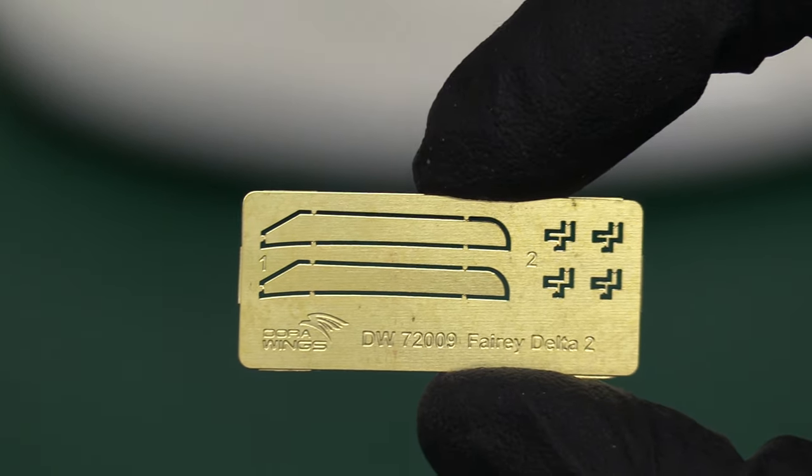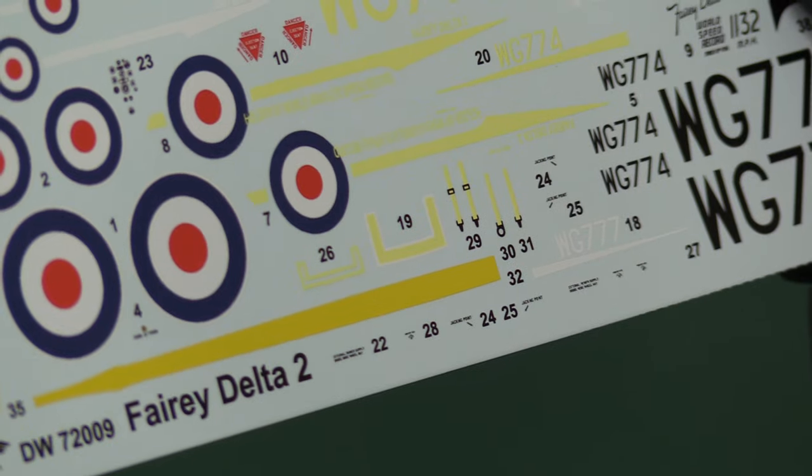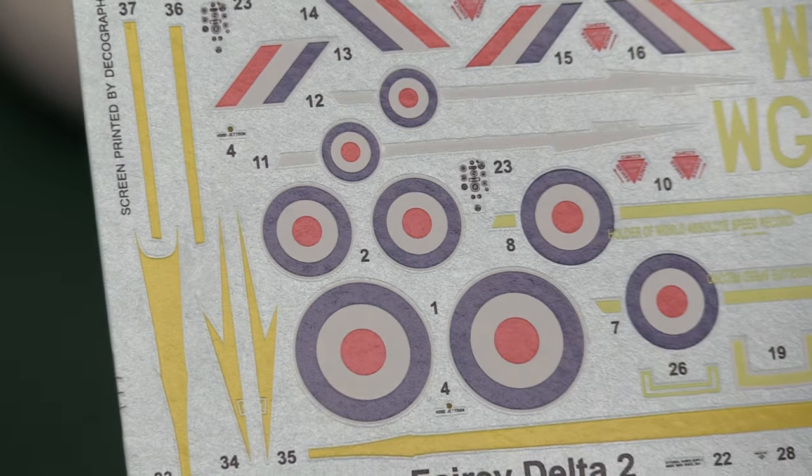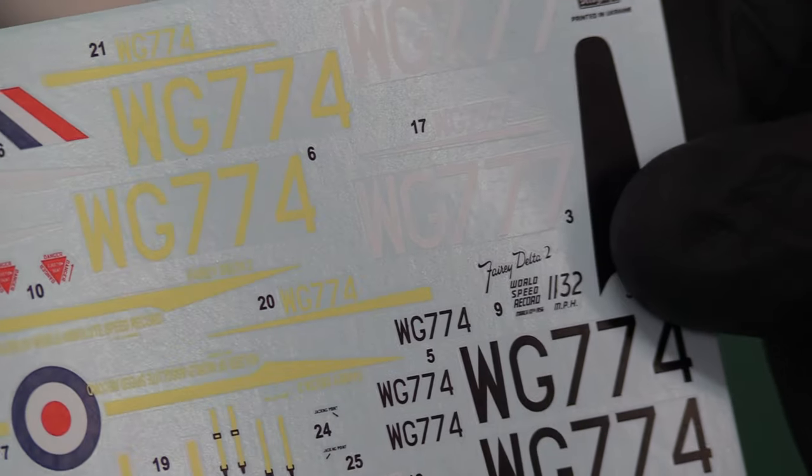Here we go, very nice. There we've got our decals. These look like they're Dora Wings own. No, I'm wrong. Screen printed by Decograph. I don't think I know them that well. They seem pretty nice. Maybe a little bit heavy on the carrier film, but not too bad at all. Quite colorful. They're kind of a satiny finish, aren't they? They're not that glossy. Probably a good thing.